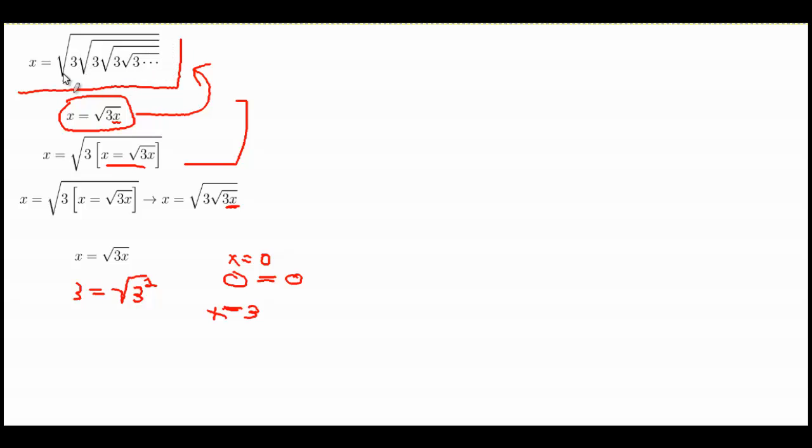This equation up here, in the nested radical, we never have a multiple of 0. So we can weakly say that x doesn't equal 0. So that leaves us with x equals 3.